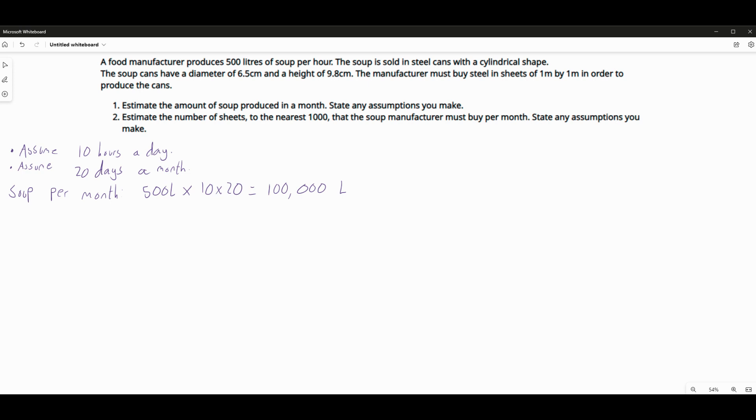So the sensible question to ask then is, well, what's the volume, how much does one soup can hold? One soup can holds. Well, we can actually work this out. We've got everything we need. We know that it's a cylinder. We've told that it's a cylindrical shape. So the volume of a cylinder then is what? It's pi r squared times h.